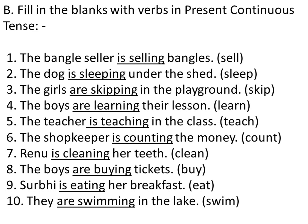Question number B is present continuous tense. Present continuous ki pehchaan kya hoti hai? Is/are ke saath aap verb ki first form ke saath 'ing' use karte hain. For example, 'Bengal seller' is one person, so I wrote 'is selling.' And in the third example, 'girls' — there are more girls, so girls are more, and I wrote 'girls are skipping.'